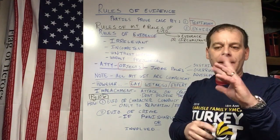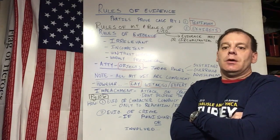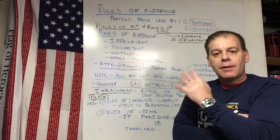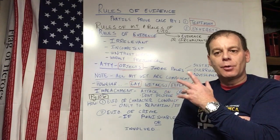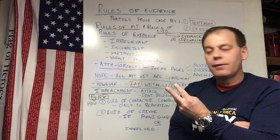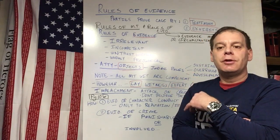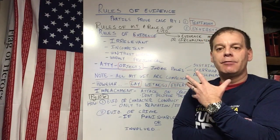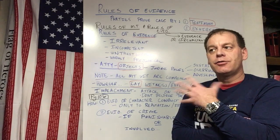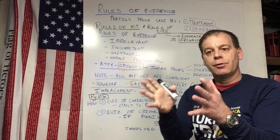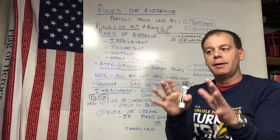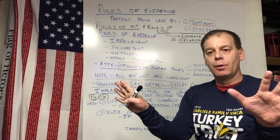So evidence can be direct — you go outside, see it raining, and testify about that — or circumstantial, where you saw all these other things that point to a conclusion, though there may be some other explanation. In our rules of evidence, we don't allow testimony in court that is irrelevant, that is incompetent, that is untrustworthy, or is unduly prejudicial.